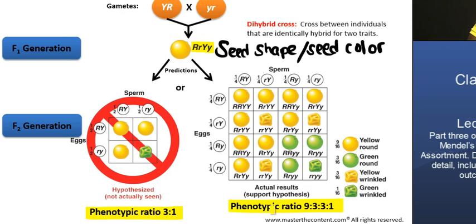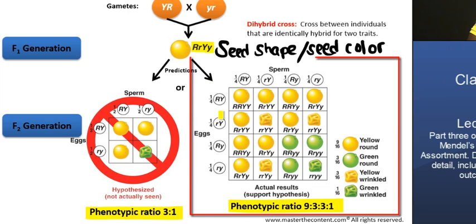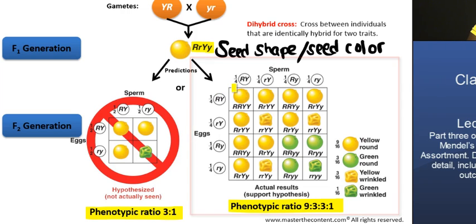How do we explain this very different phenotypic ratio in the F2 generation? It turns out that the alternative hypothesis — which also happens to be the correct one — is that the two pairs of alleles in the F1 generation actually segregate independently of each other during the formation of gametes. In other words, the genes are packed into gametes in all possible allele combinations, as long as each gamete has one allele for each character.